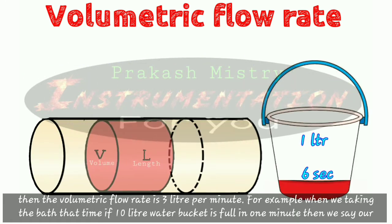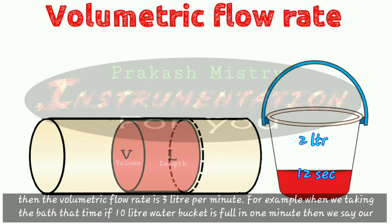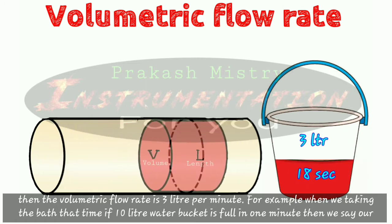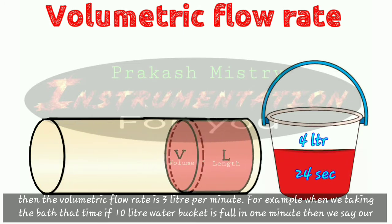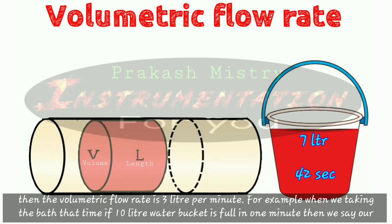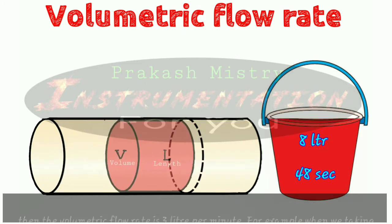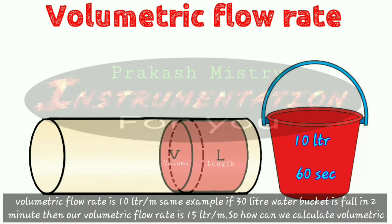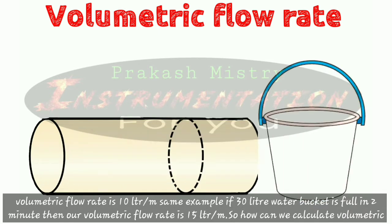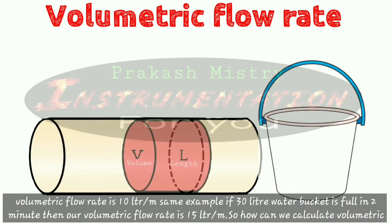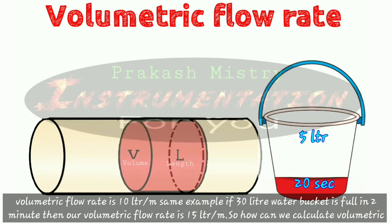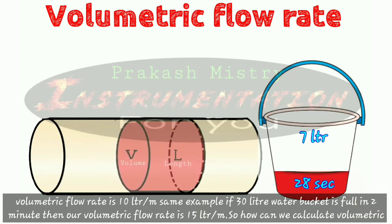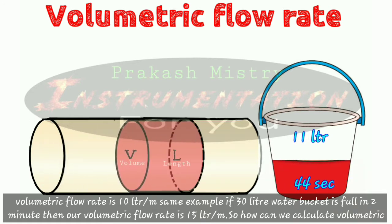For example, when we are taking a bath, if a 10 liter water bucket is full in one minute, then we say our volumetric flow rate is 10 liters per minute. Similarly, if a 30 liter water bucket is full in two minutes, then our volumetric flow rate is 15 liters per minute.